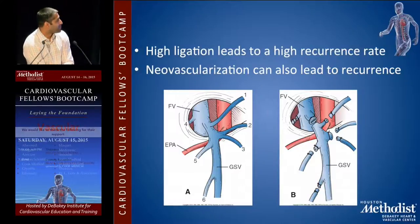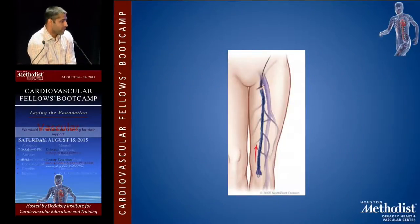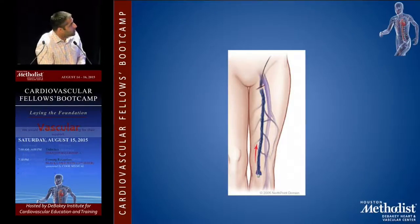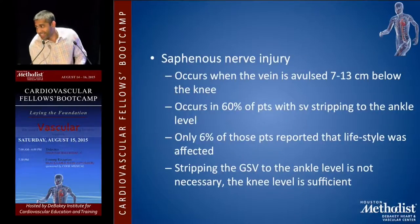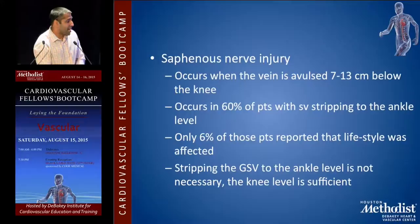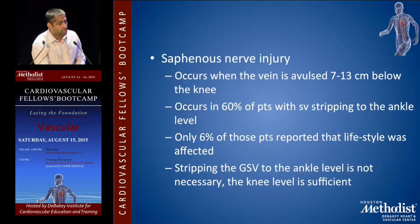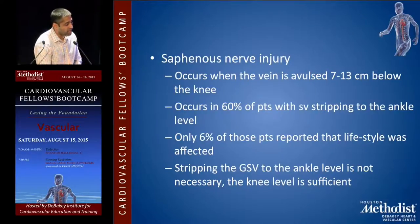Neovascularization can also lead to recurrence. You slip the catheter down the vein, put the mushroom cap on, and pull hard. Saphenous nerve injury occurs when the vein is stripped 7 to 13 centimeters below the knee. It occurs in 60% of patients with stripping to the ankle, but only 6% reported lifestyle was affected. Stripping to the ankle is not necessary — usually to the knee is sufficient.